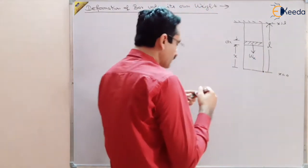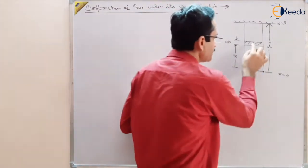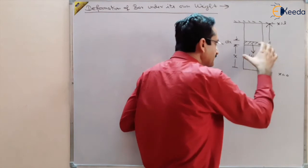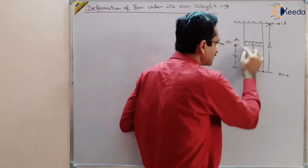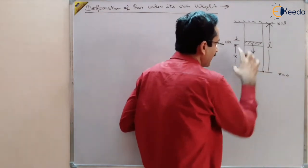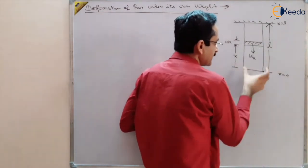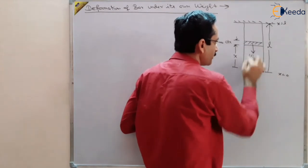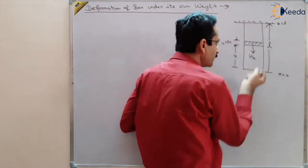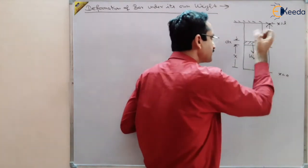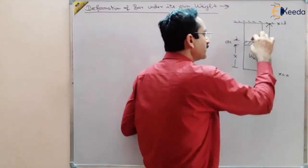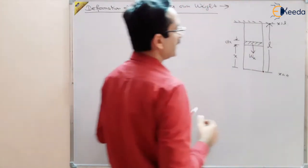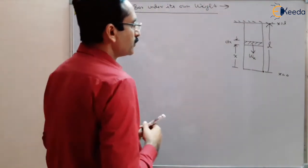Who is pulling this small element? The part of the body below — at distance x from the bottom with area of cross section A — is pulling this dx downward, trying to increase the length of dx.